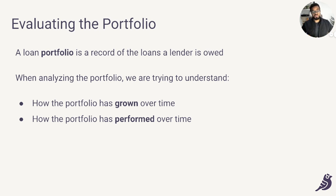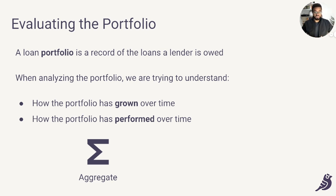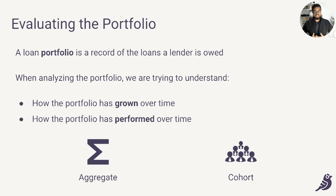There are two ways of answering these questions. The first is on an aggregate basis — looking at the entire portfolio. And the second is on a cohort basis, that is, analyzing the portfolio by grouping loans together based on when they were originated.